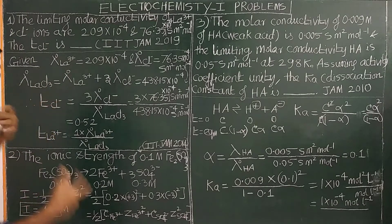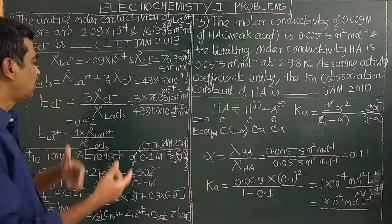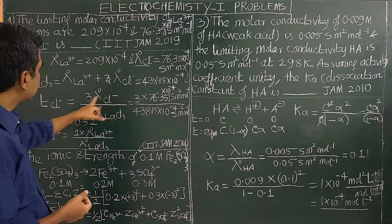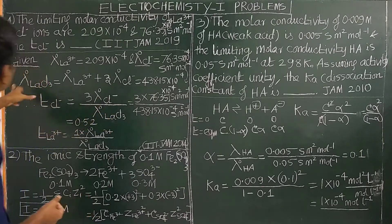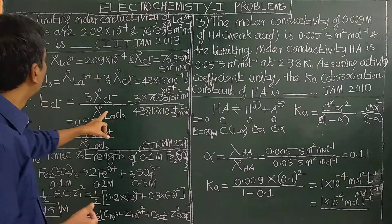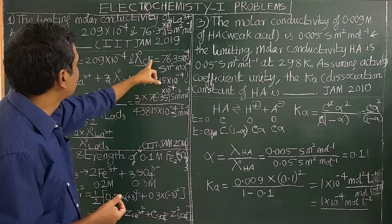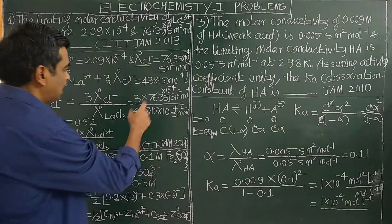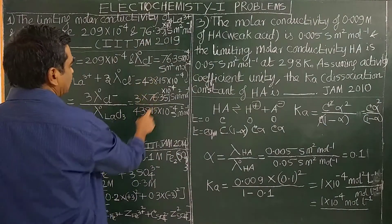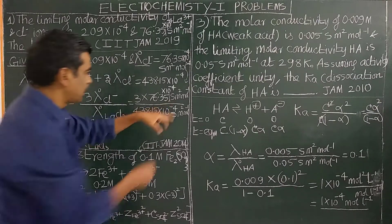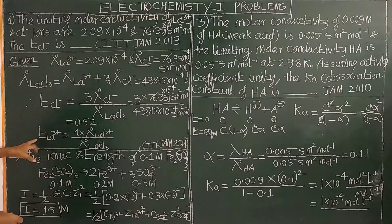Now the transport number — what is the formula for transport number? The transport number of Cl⁻ is: t(Cl⁻) = 3 × λ°(Cl⁻) divided by λ°(LaCl₃). Substituting 3 × 76.35 × 10⁻⁴ divided by 438.15 × 10⁻⁴, the transport number of Cl⁻ is 0.52 (no unit). Similarly, the transport number of La³⁺ can be calculated using λ°(La³⁺) divided by λ°(LaCl₃).